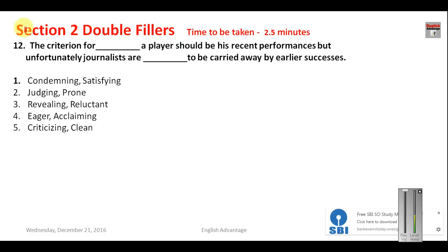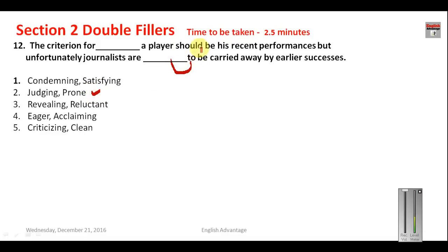Question number twelve: 'The criterion for judging a player should be his recent performances, but unfortunately journalists are __ to be carried away by earlier successes.' You need a word that can be combined with 'to'. 'Prone' is the word that correctly goes with 'to'. The sentence reads: 'Journalists are prone to be carried away by earlier successes' — they get too easily excited. Also note that this preposition 'to' should be followed by the -ing form of the verb, which is correctly used here. Your answer will be 2.